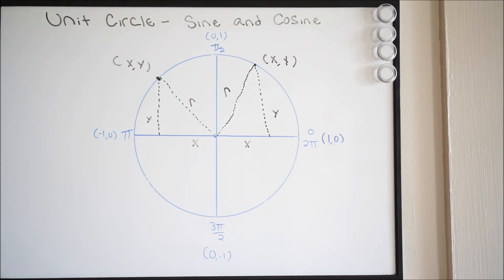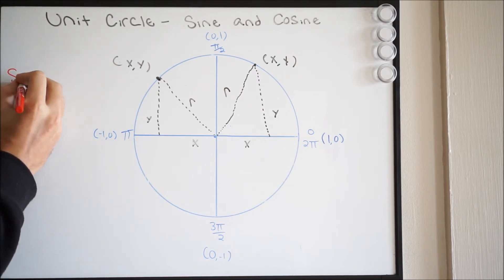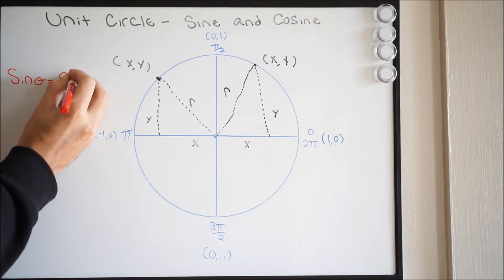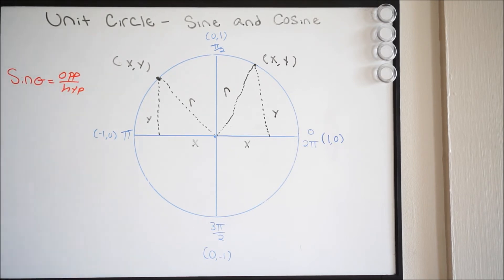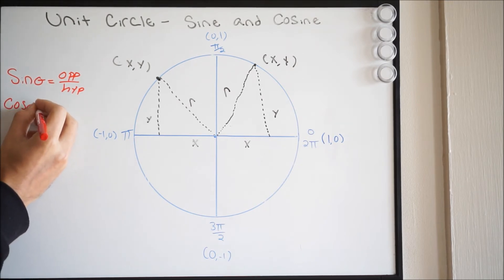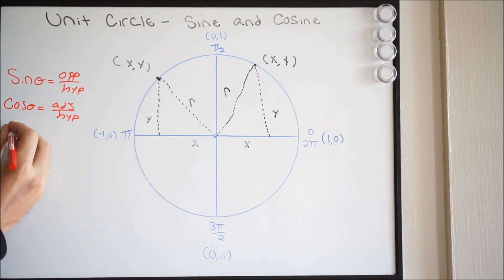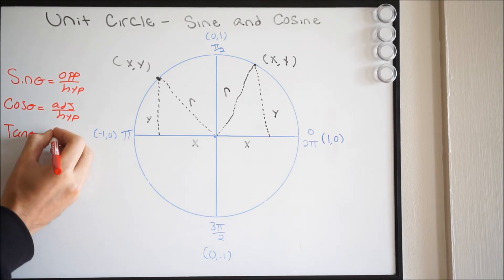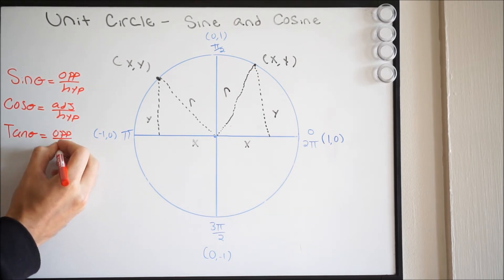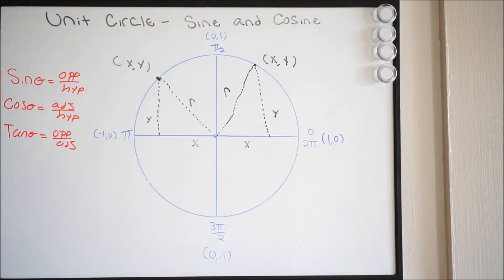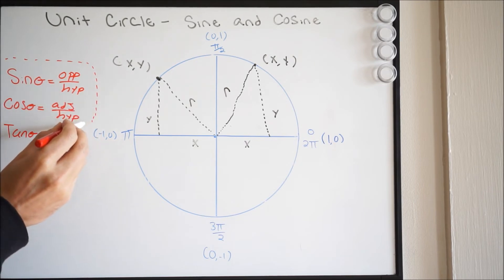Now let's talk about how sine and cosine work into this. In order to do this, we first need to look at the ratios of trig functions. So going back to the ratios of trig functions, we get the following: we know that sine theta is going to be opposite over hypotenuse; cosine theta is going to be adjacent over hypotenuse; and tan theta is going to be opposite over adjacent. For this example, we only look at sine and cosine — we don't have to worry about tangent yet.